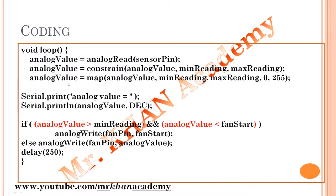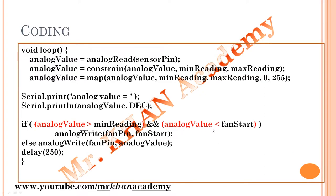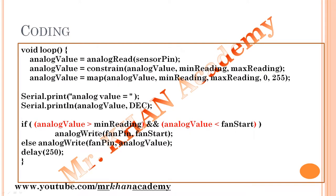After reading the analog value, I need to start the fan. The fan speed will totally depend on light intensity: if light intensity is more, the speed is full; if less, the speed is less; and if light intensity is zero, the fan should stop. For this I use an if condition: if `analogValue` is greater than `minReading` (30) and `analogValue` is less than `fanStart` (100) — meaning the value is between 30 and 100 — then pass 100 to the fan using `analogWrite`.